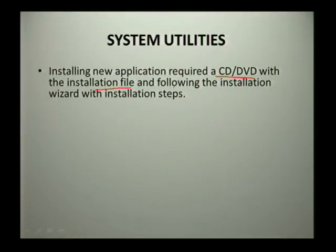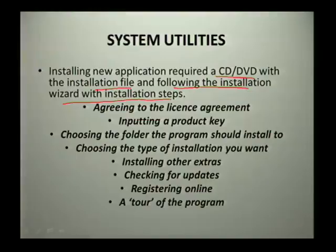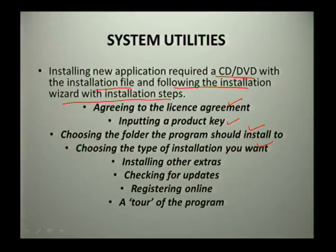When installing a new application, you need to get the CD with the installation file and then follow the installation wizard with the installation steps. If you are not getting the software from a CD, you can download it and then run and follow the installation steps. Steps include: agreeing to the license agreement, entering your product key, choosing the folder for the program, and choosing the type of installation you want.